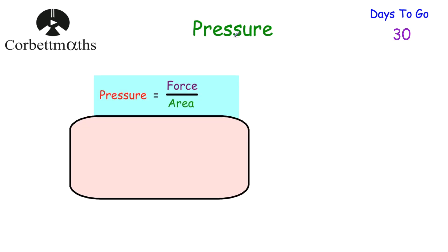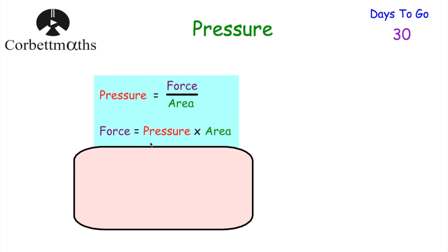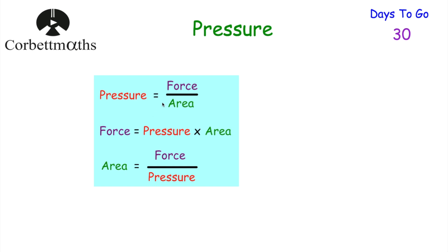Now let's look at pressure, another compound measure. Whenever a force is applied over a particular area, pressure equals force divided by area. Rearranging: force equals pressure multiplied by area, and area equals force divided by pressure. So: dividing force by area gives pressure; multiplying pressure by area gives force; and dividing force by pressure gives the area over which the force is applied.